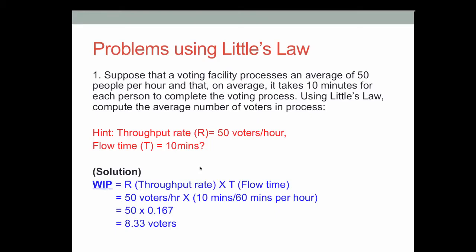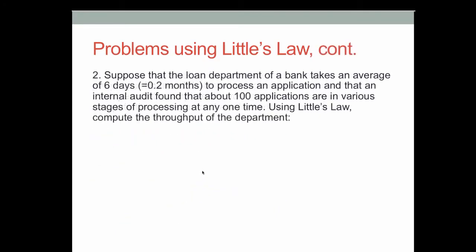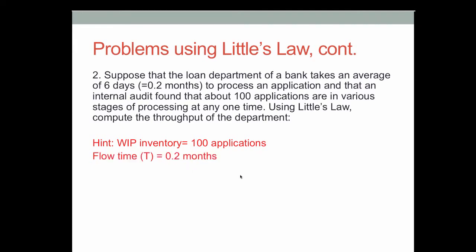Let's go to the second question. The second question is asking us to use Little's Law to compute the throughput rate of the department. Here is a hint: WIP inventory in this case is 100 applications. Flow time t is 0.2 months — that is, 6 days divided by 30 days equals 0.2 months.